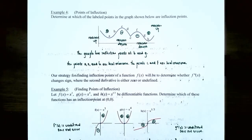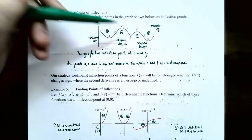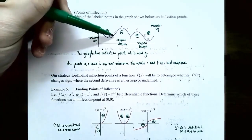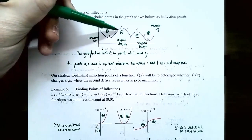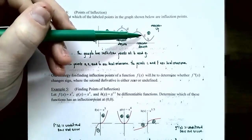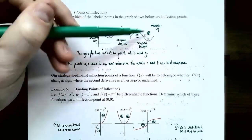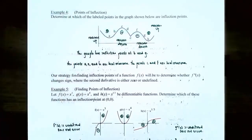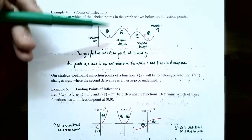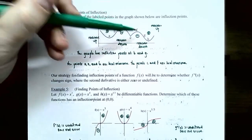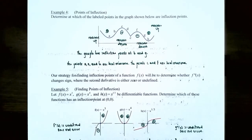Whenever the concavity changes, those points are called inflection points. The graph is first concave up and then concave down, so point b is an inflection point because it changes from bending up before b to bending down after b. Point g is also an inflection point because the graph is concave down before g and changes to concave up after g. Point a is a local minimum, point e is a local minimum, point h is a local minimum, and there are local maxima at c and f.